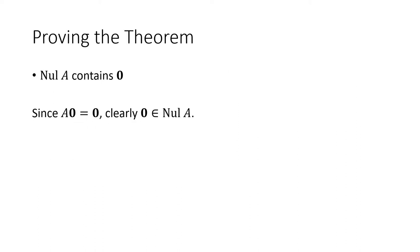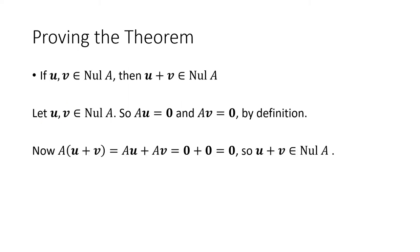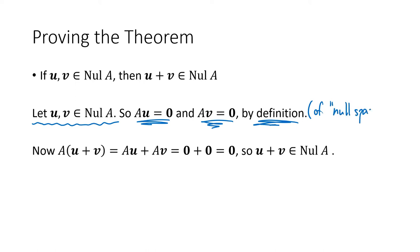First, to show the null space contains the zero vector: to check whether a vector is in the null space, we multiply the matrix by that vector and see whether we get zero. When we multiply matrix A by the zero vector, it doesn't matter what the matrix is — we always get the zero vector. So the zero vector is in the null space. For closure under addition, we let u and v be in the null space, meaning A times u equals zero and A times v equals zero by definition of null space.